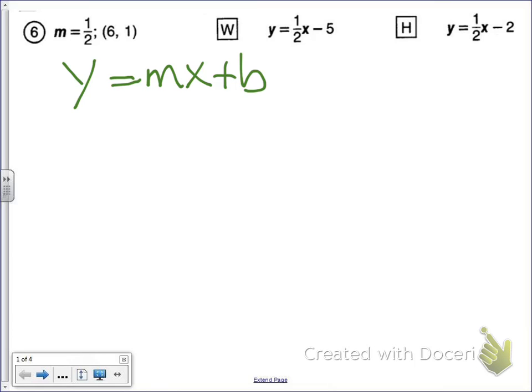Remember, b is the only thing I don't know. I have my slope, now I need to find b, my y-intercept. If I already know what m is, I wish I could just know what x and y are. If I knew what x and y are, then I can just plug all those numbers in and get b by itself.